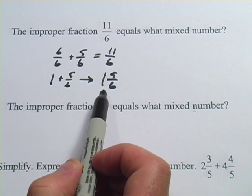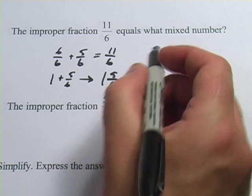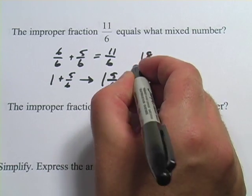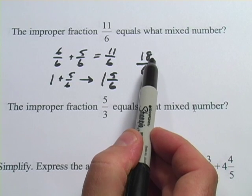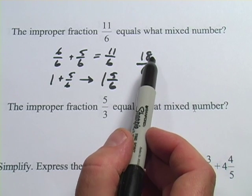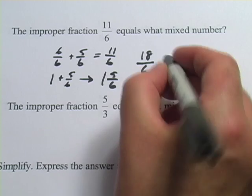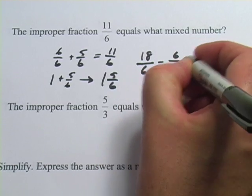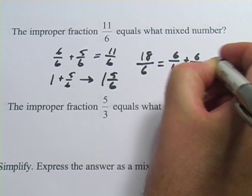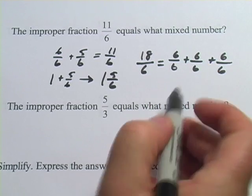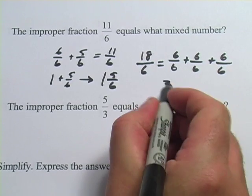Sometimes it may be more than 1 that you get for the integer part. For example, if this had said 18 sixths, well there's three 6's in 18. 6 plus 6 plus 6 would be 18. That is the same thing as 6 sixths plus 6 sixths plus 6 sixths or 1 plus 1 plus 1. That would actually equal 3.